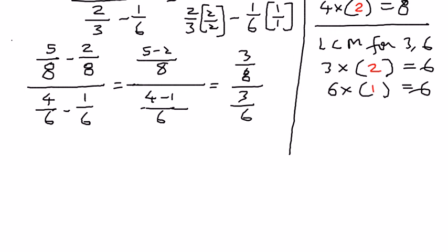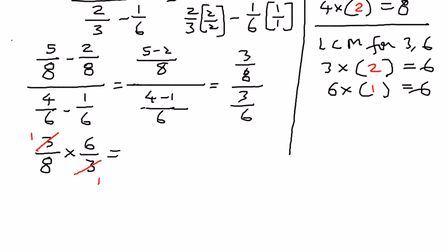So that part simplifies to 3 over 8 divided by 3 over 6. We write the numerator fraction as is, convert division to multiplication, and flip the denominator — writing the inverse of 3 over 6 as 6 over 3. Since 3 cancels in numerator and denominator, and 6 and 8 are both multiples of 2 (2×3=6, 2×4=8), this reduces to 3 over 4.